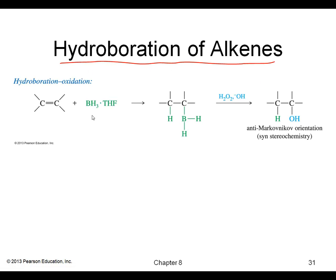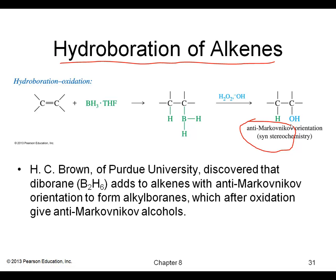Hydroboration is another way to make an alcohol, but one big difference: we get the anti- or non-Markovnikov product. So here the OH will go on the less substituted carbon of the double bond.